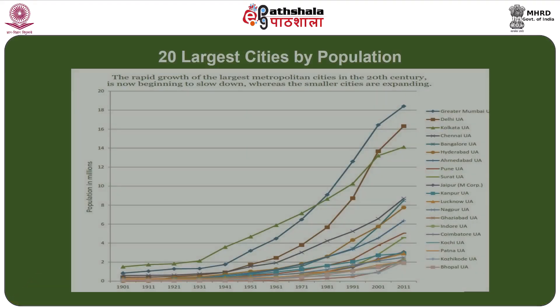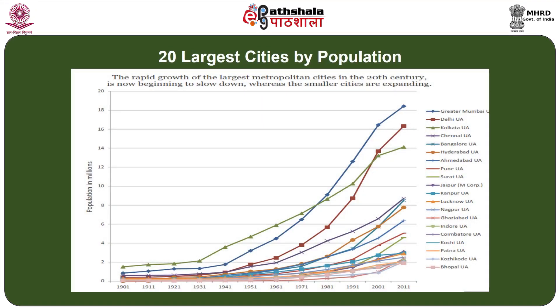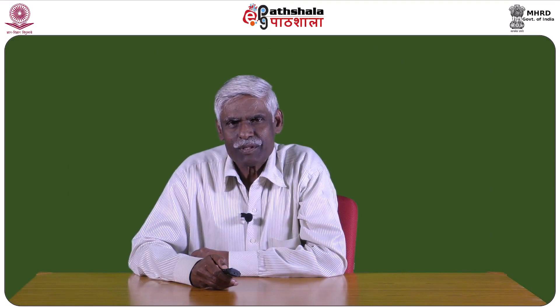The major concentration of population, especially in the urbanization context, is in major metropolitan cities like Greater Mumbai, Delhi, Kolkata, and Chennai, which have a larger share of urban population growth, clearly depicting the skewness that exists in urbanization in the country.